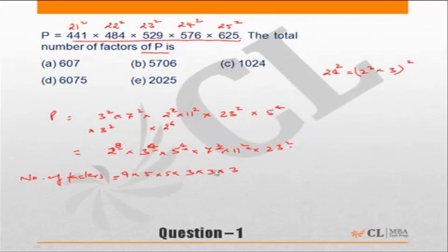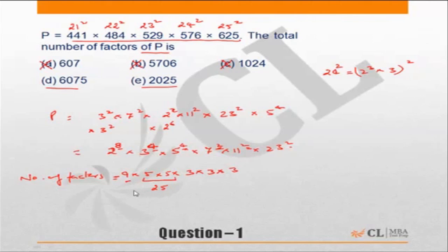I have always maintained you should work with the choices. This expression has 5 times 5, meaning the answer must be a multiple of 25 — any choice that is not a multiple of 25 is incorrect. We are left with two choices: 6075 and 2025. Do an approximation: 5 times 5 is 25, then 25 times 9, roughly 25 times 10 times 10 gives 2500. The answer should be greater than 2500, so Choice D, 6075, is correct.